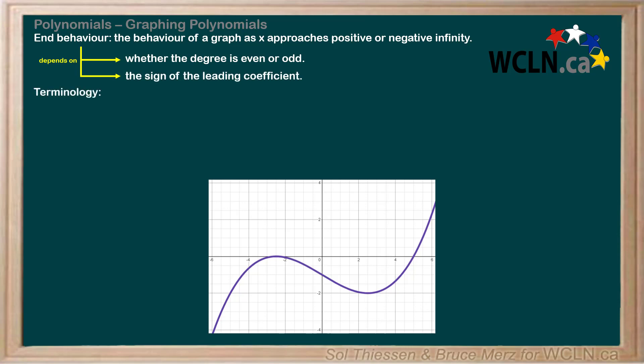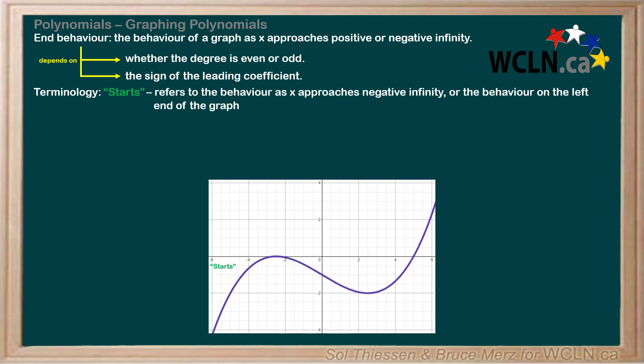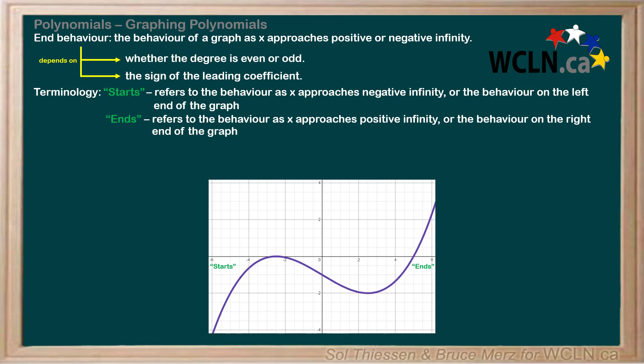Let's go over some terminology we'll be using. When we say that a polynomial starts somewhere — typically up or down — that refers to the behavior as x approaches negative infinity, or the behavior on the left end of the graph. When we say that a polynomial ends somewhere, that refers to the behavior as x approaches positive infinity, or the behavior on the right end of the graph.